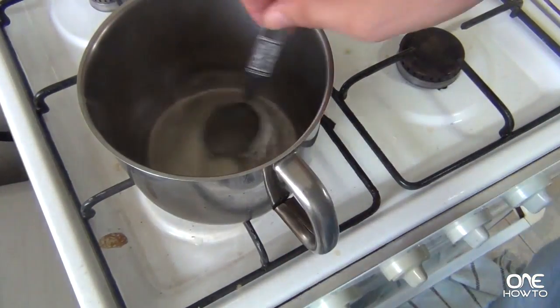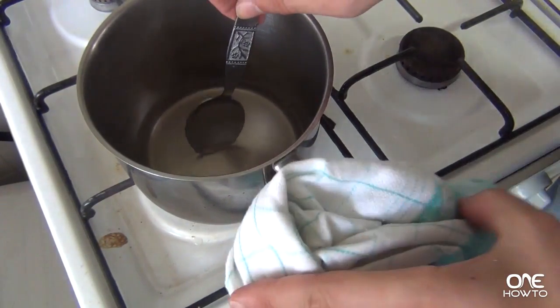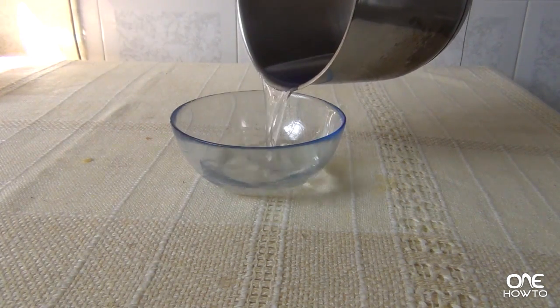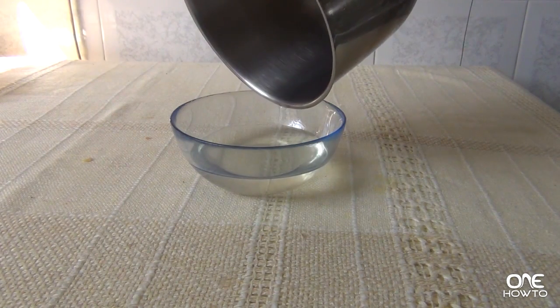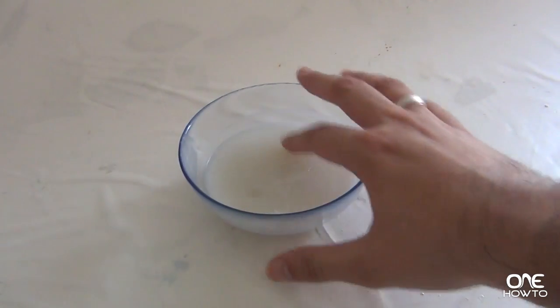Carefully remove the saucepan from the heat and pour it in the glass bowl. Let it rest for half an hour or put it in the fridge so it's ready to use even faster for your effects makeup.